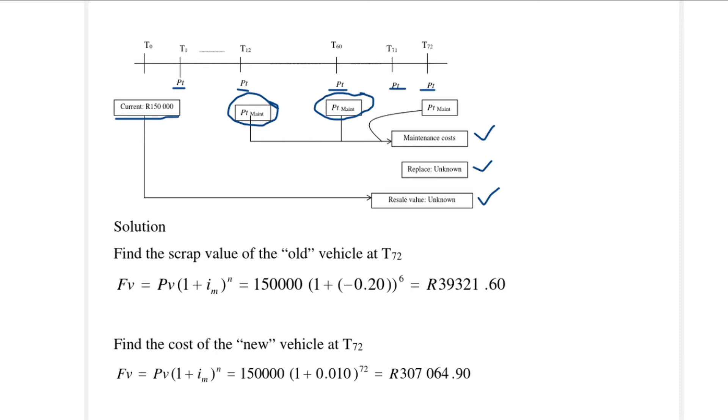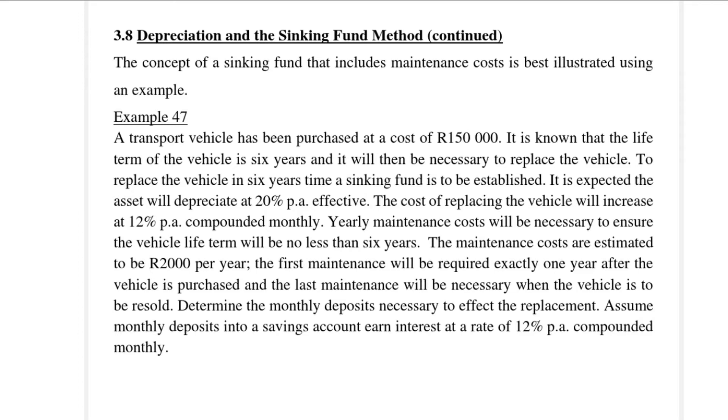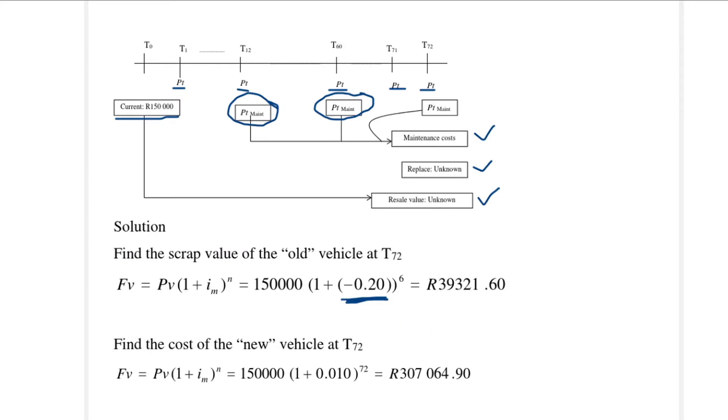Let's first start by finding the second-hand value of the vehicle, and we make use of compound depreciation. We use exactly the same formulas we use for compound interest, but the only difference is that the rate here is negative. The depreciation rate is 20% per annum effective, so the depreciation rate is negative and it's per annum effective. We have six years, so there we have the value of the asset in six years time, the second-hand value.